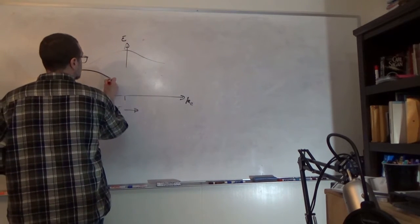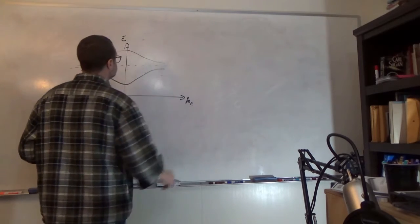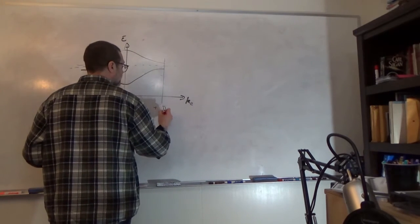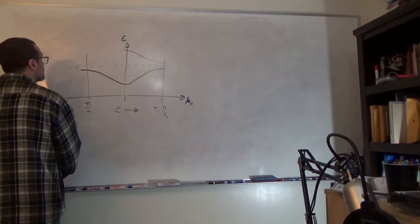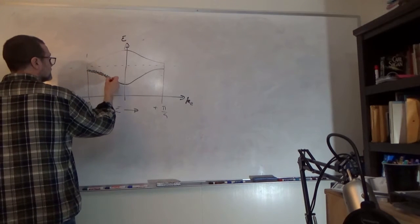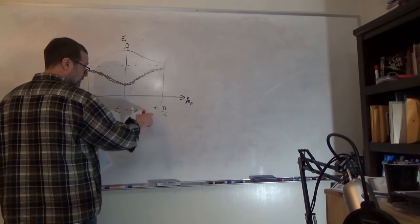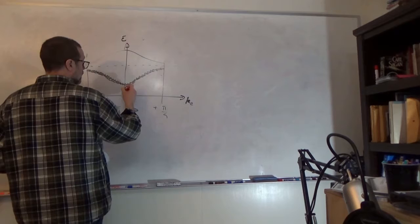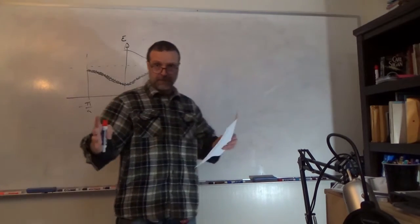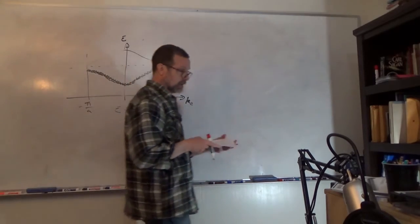If we apply an electric field in the direction of some kz, what would happen is these states would start to become full, these states would start to become empty, and we'd have scattering back to fill those empty states. This is a picture where we had our Fermi sphere migrating, so the net average displacement has some delta k — this goes back to our concept of metals having a drift velocity that depends on the degree of separation.